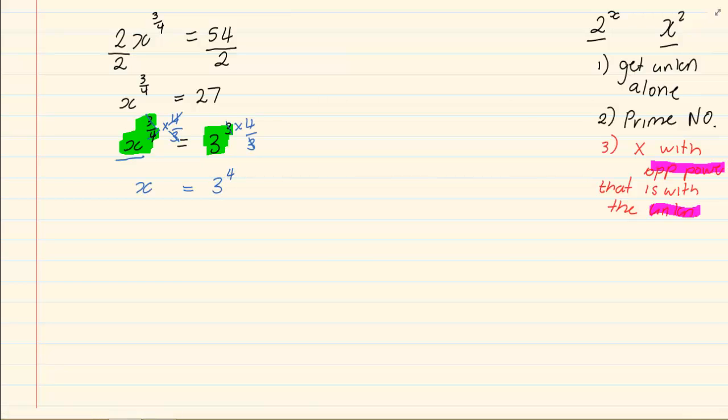Now, it is important to remember that at this step, we broke down to prime numbers. Many times, students would leave the 27 and they would multiply it by 4 over 3.